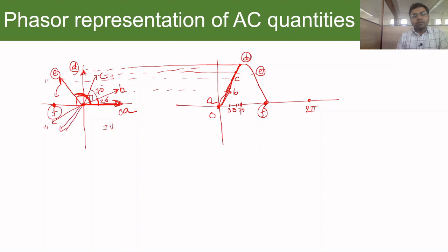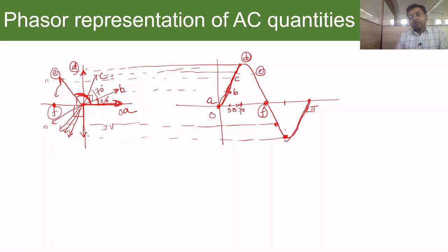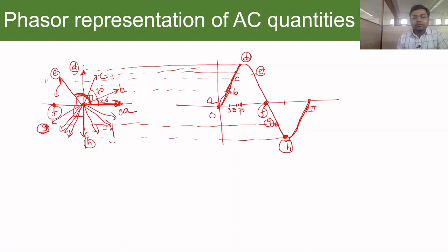When the phasor rotates into the third and fourth quadrant — roughly 180° to 360° — it produces the negative half of the sinusoid. The phasor reaches a negative peak, and intermediate points G, H, and I map to corresponding points on the negative half of the waveform.